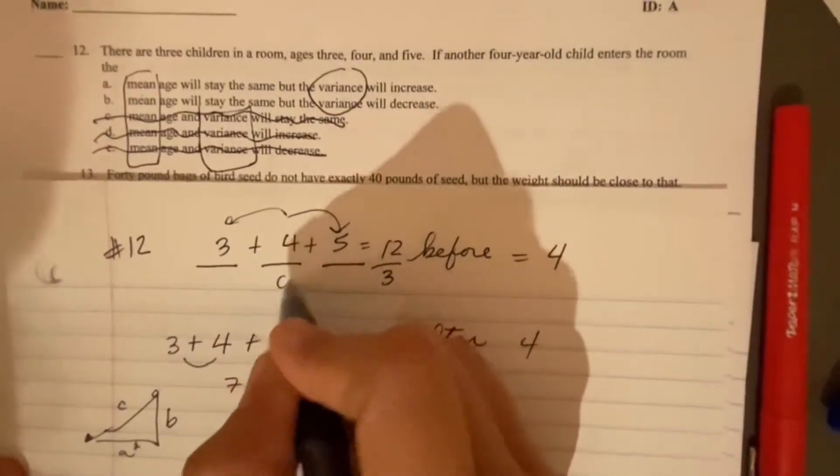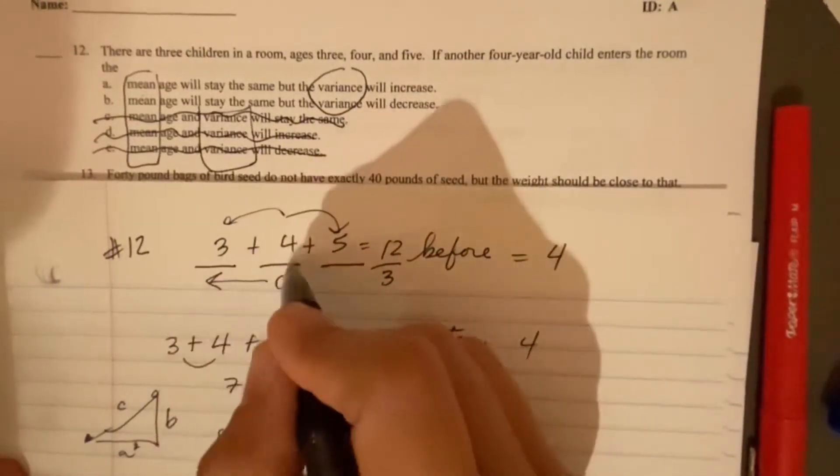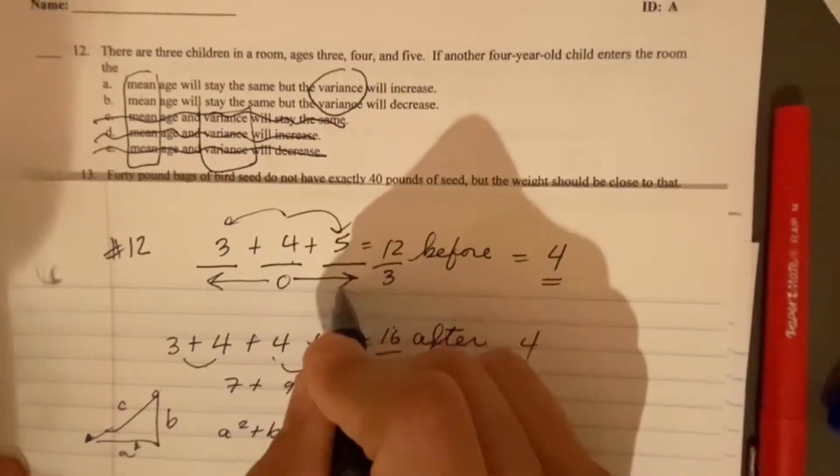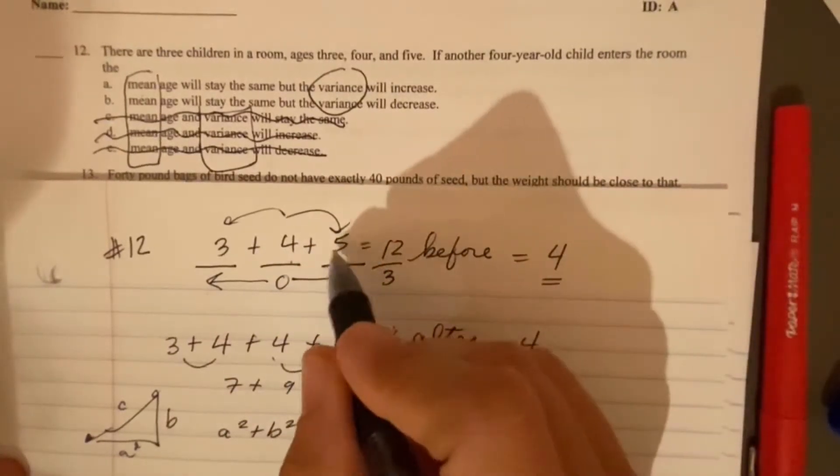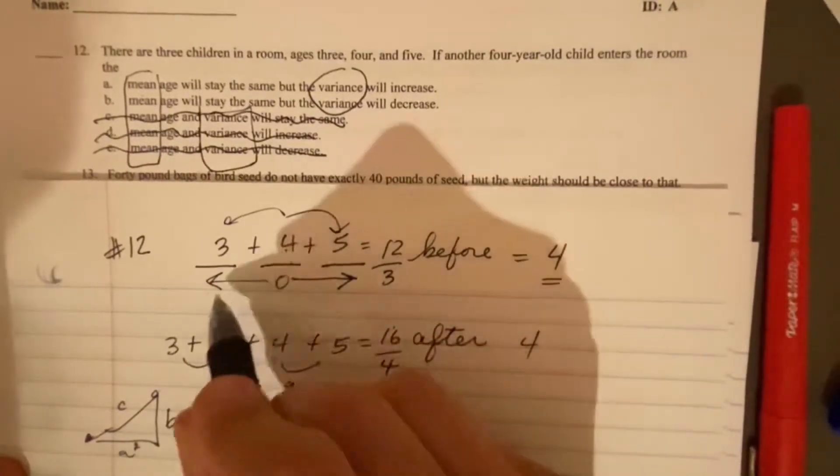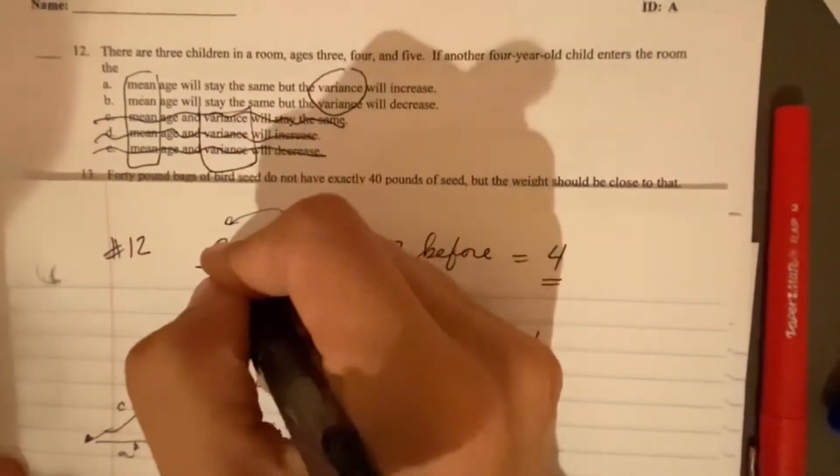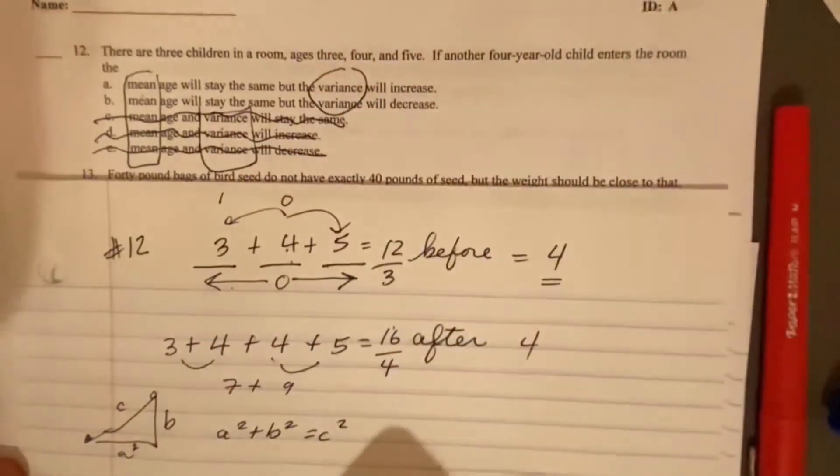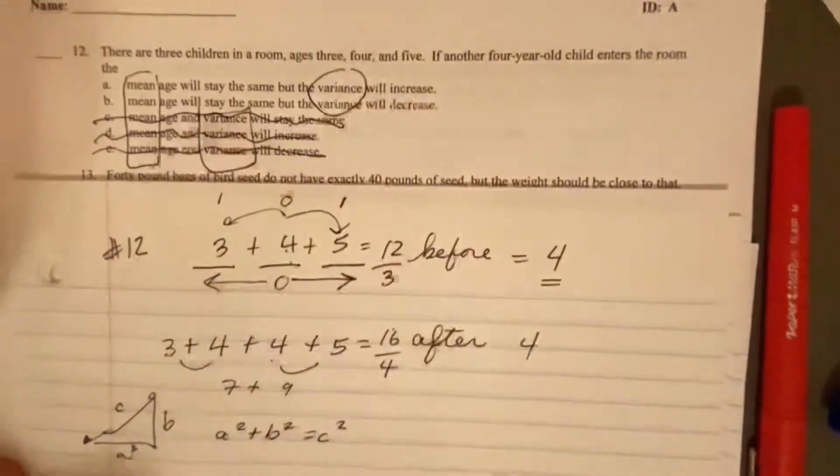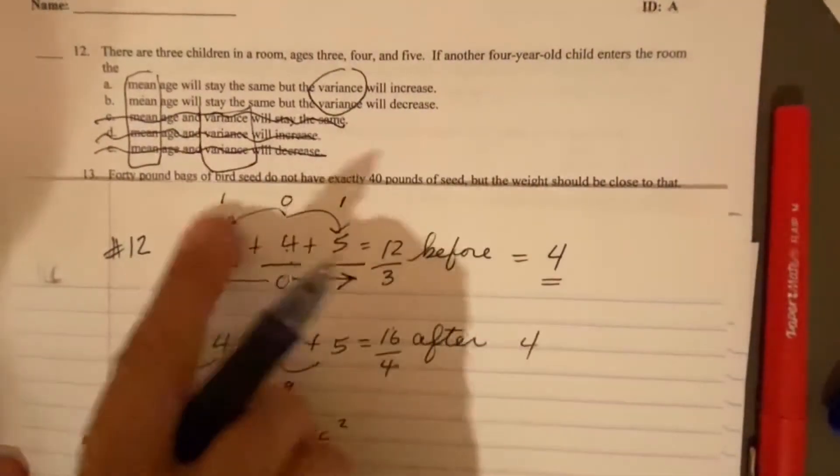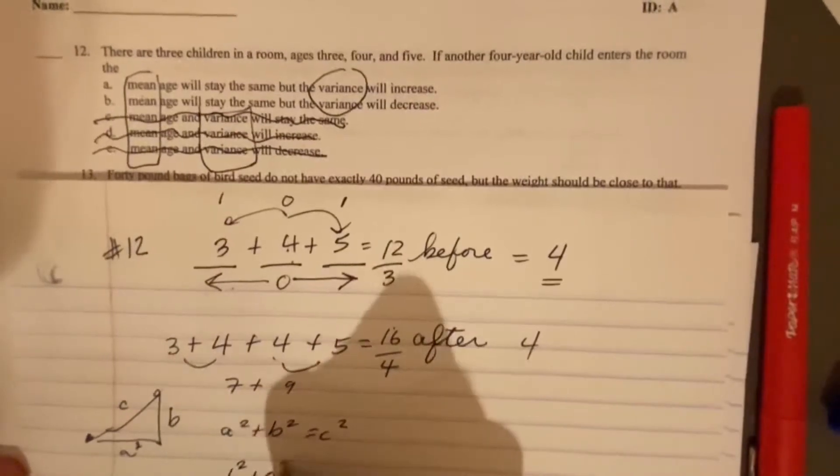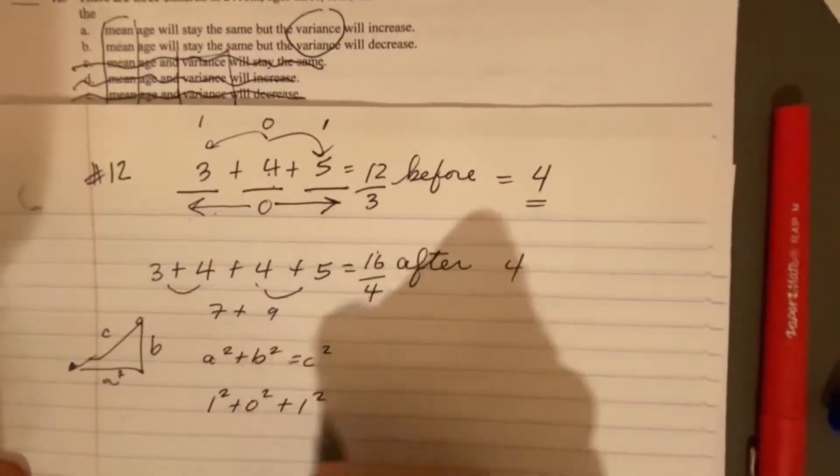So it's saying how far is the number three from the mean? And we know the mean is four. How far is the number five from the mean? And we know the mean is four. So in both circumstances, this is one away from the mean. This is none away from the mean. That's one away from the mean. So it's adding this up. So one squared, zero squared, one squared, adding all those up.